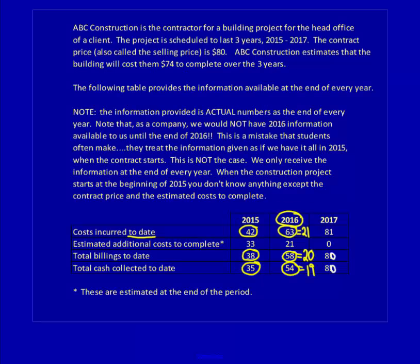Note that in my last two videos I pointed out using a speech bubble that I had made a mistake in 2017 for the total billings to date and the total cash collected to date. I have now corrected that, so you can see here that the numbers are now correct — a total of $80 for both categories. The download below this video is also corrected. My apologies for any confusion this may have caused.